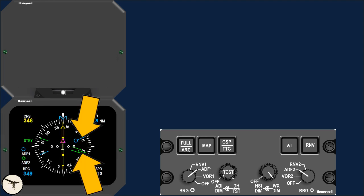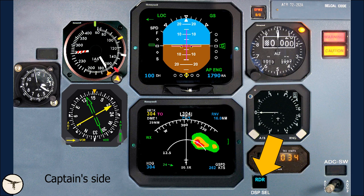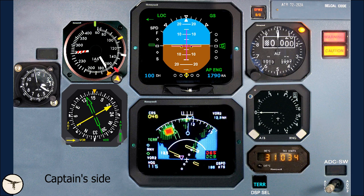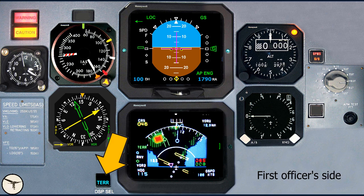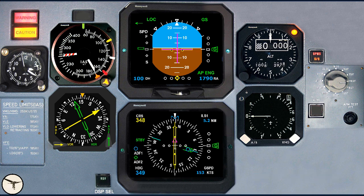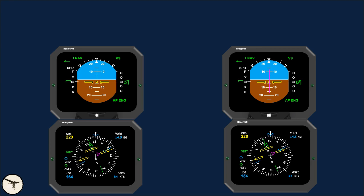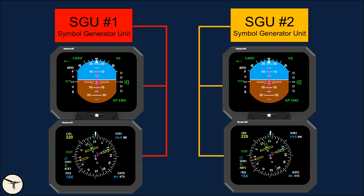The E-HSI has two pointers like the RMI, controlled with selectors. A display select push button switches between weather radar display and terrain display — consequently, the weather radar cannot be shown when terrain mode is in use. When one screen is selected off, the other goes into composite mode, displaying a mix of data from both screens. The screens receive image information from the SGU — the Symbol Generator Unit — making EFIS like a computer with two screens where the SGU is the graphics card.